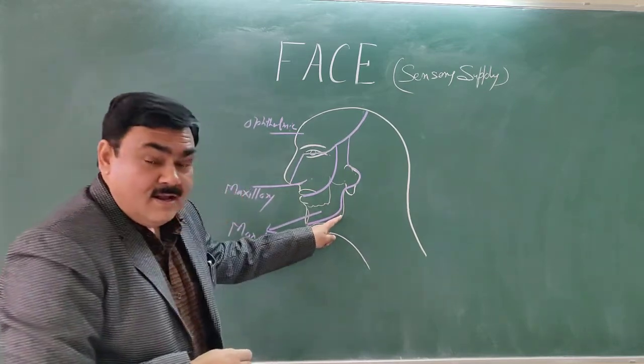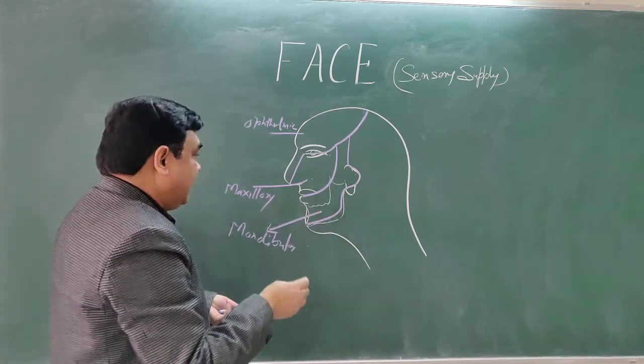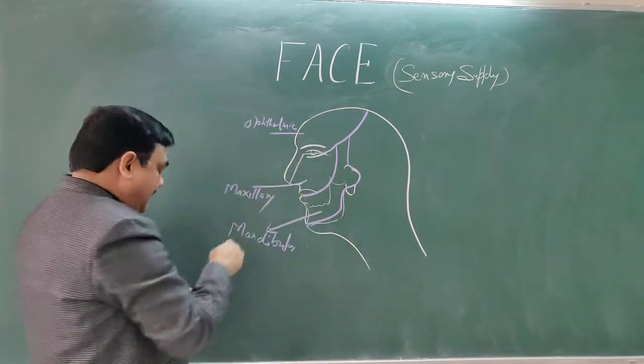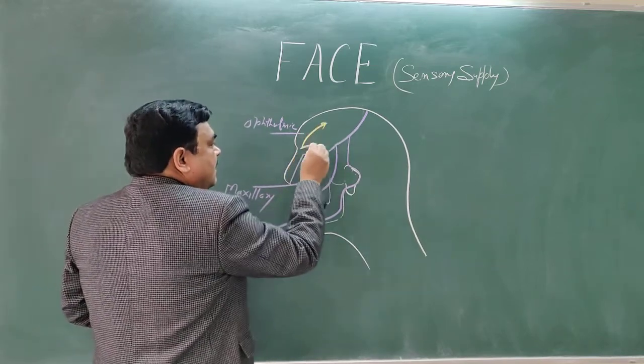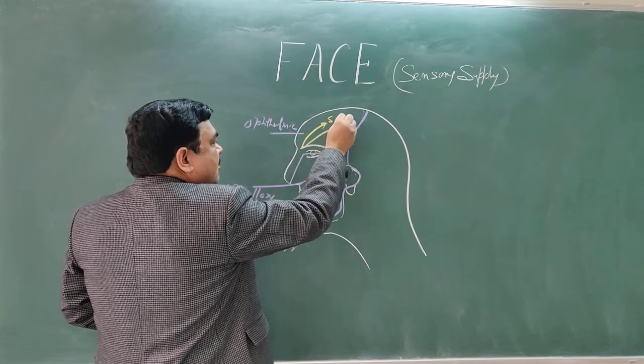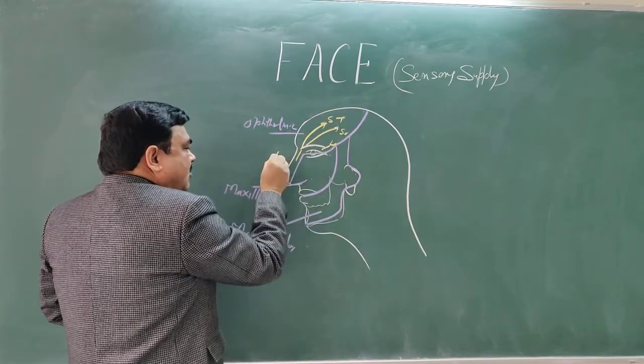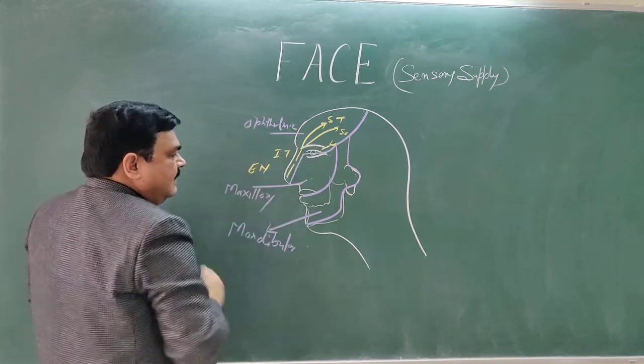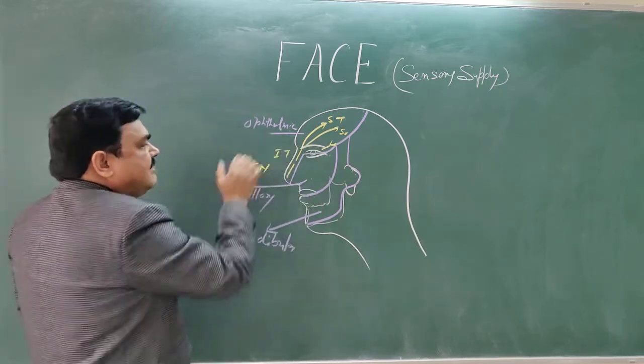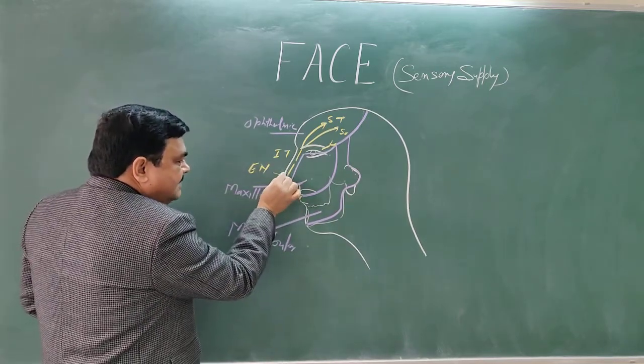Here is angle of the mandible, and the nerve supply. This is ophthalmic division. It gives branches: supratrochlear, supraorbital, infratrochlear, external nasal, which is branch of ophthalmic nerve. The tip of nose is supplied by external nasal.